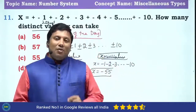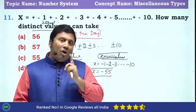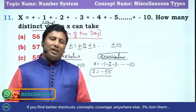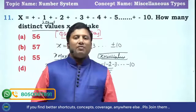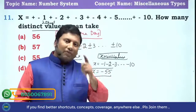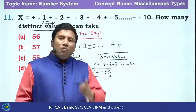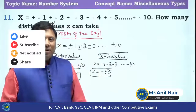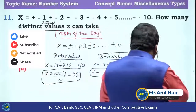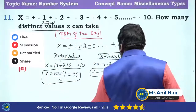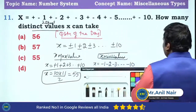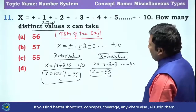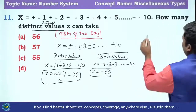Now the question is: will X take all the integers from minus 55 to 55, or will it skip some values? If it does not take some value, why does it not take that value? We will see. The range is minus 55 to 55.